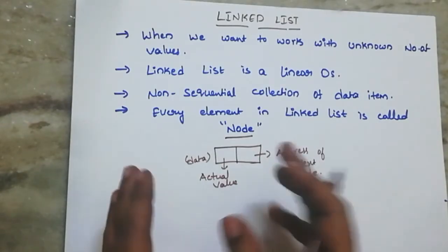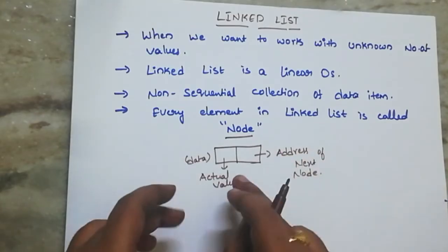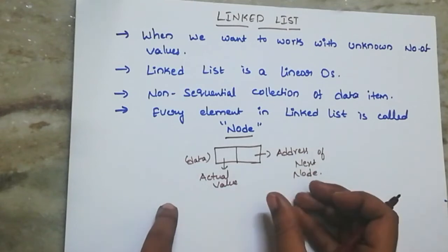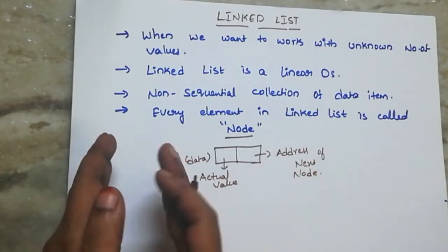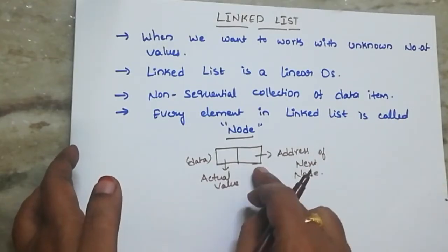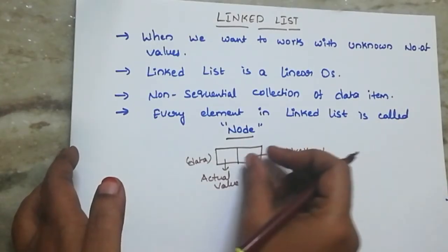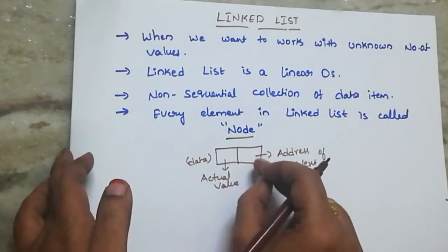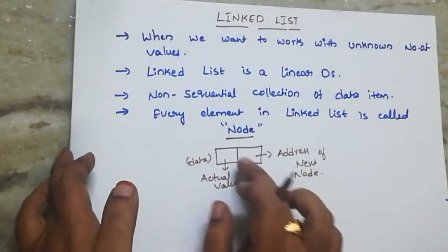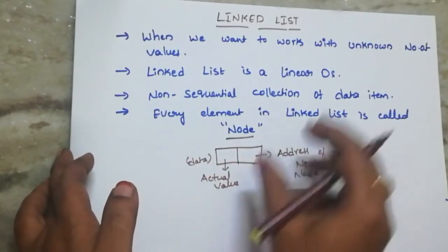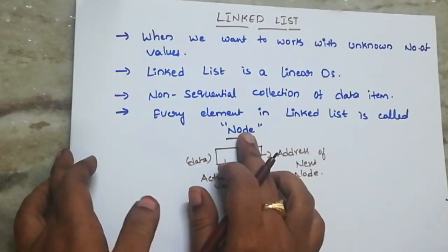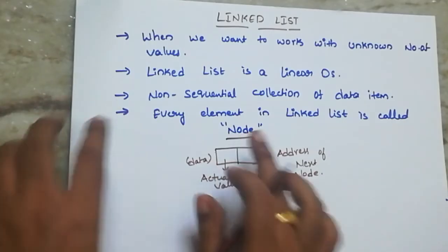It is a collection of nodes. The first part of a node stores the element, and the next part stores the address. So in a linked list, one element is nothing but one node. Every node has only one element.